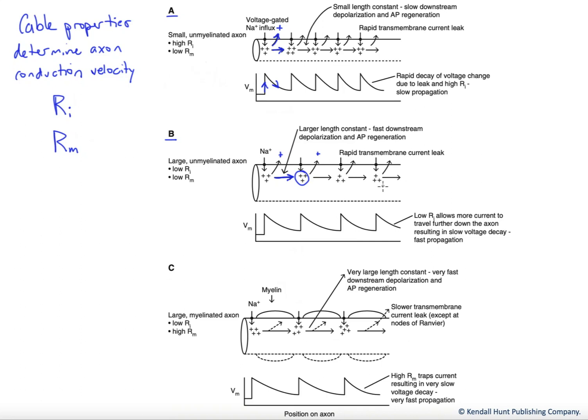So large axons are faster axons. In C, we have the fastest possible scenario, and that's where we add myelin. Now, you might say, well, why don't we have myelin everywhere? Because we'd make all axons fast.